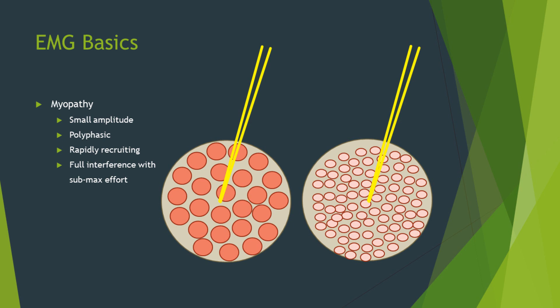So you get small amplitude because they've all shrunk, and they've become polyphasic because there are more of them crowded around the needle. More of them are being seen by the needle and the oscilloscope.